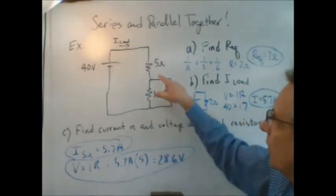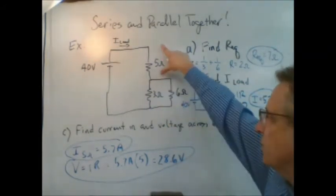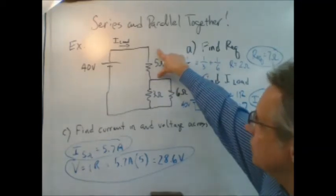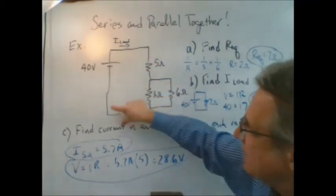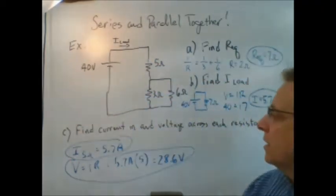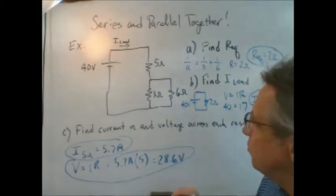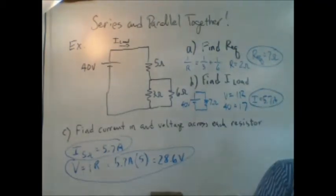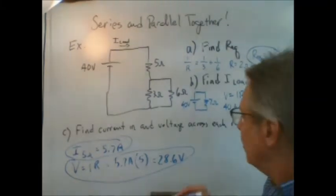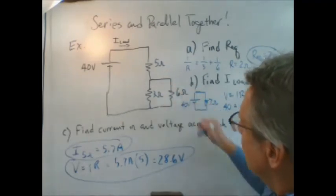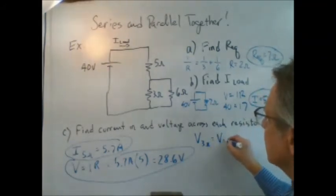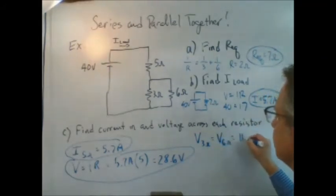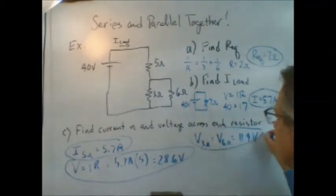Let's check now these two resistors. If there's 28.6 volts being dropped here, then this drop plus this drop has to equal 40. So 40 minus 28.6 equals 11.4. So there's 11.4 volts dropped across the 3-ohm resistor and the 6-ohm resistor. So there's another answer.